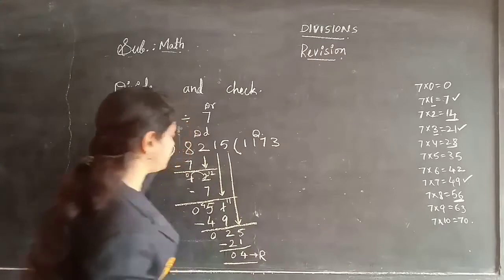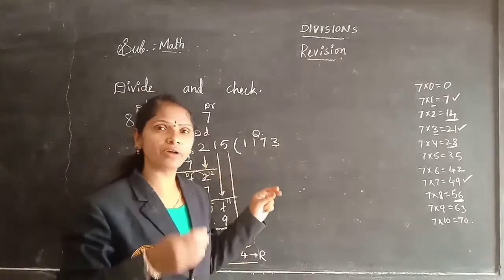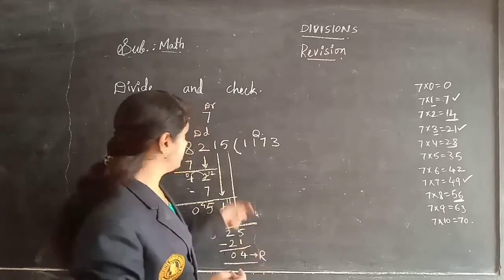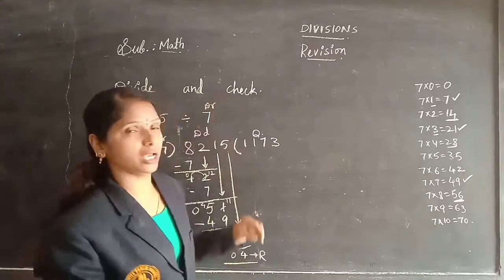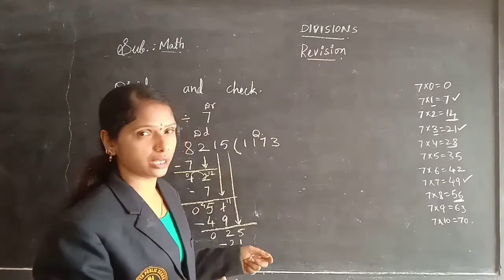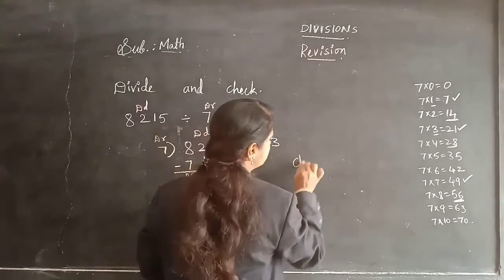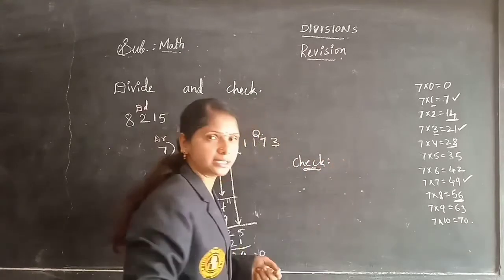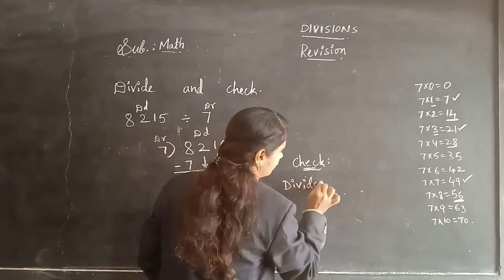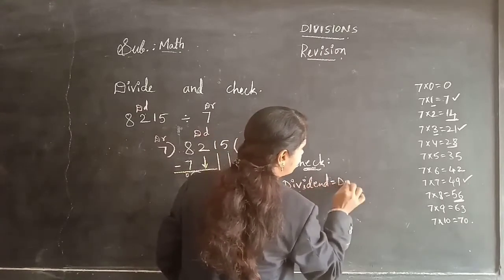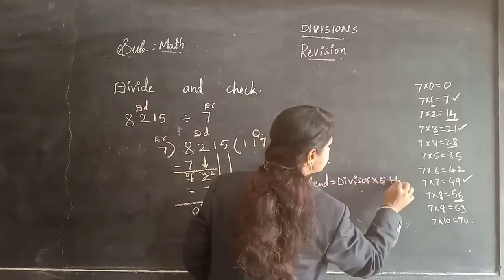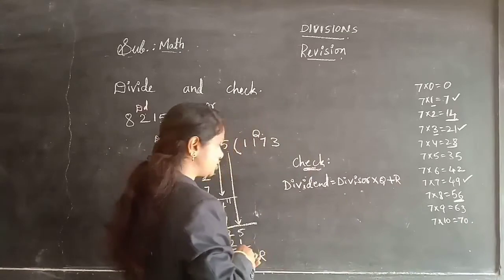If in the heading they ask to divide only, stop here. But in this problem they ask to divide and check. So we need to check if the division is correct using the check formula: dividend equals divisor × quotient + remainder.